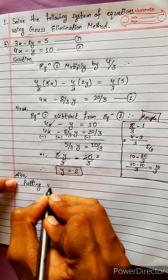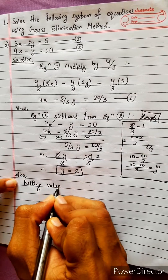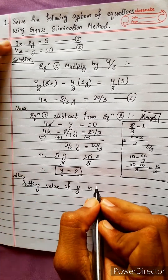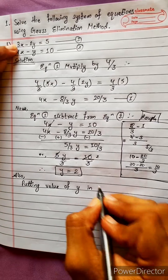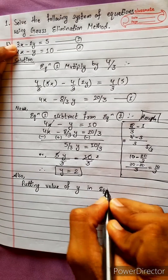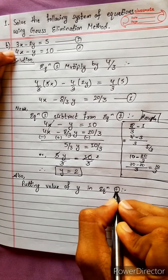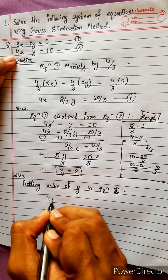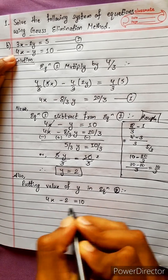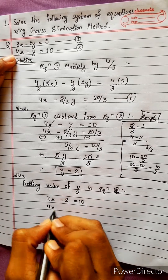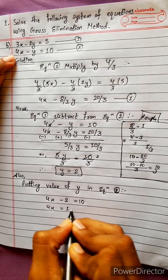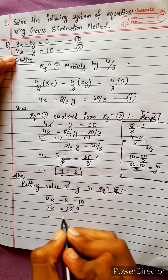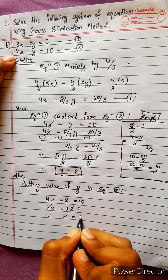Putting the value of y into equation 2: 4x minus 2 equals 10, so 4x equals 12, therefore x equals 3.